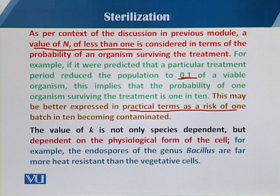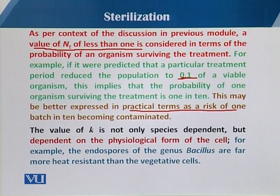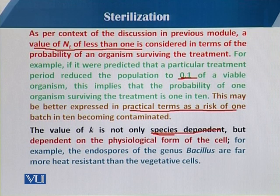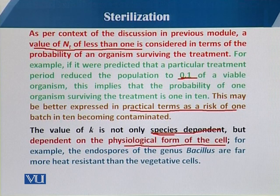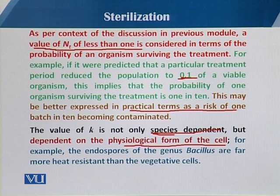So the number of batches determines the possibility of contamination being carried out. In this case, the value of K is not species-dependent but depends upon the physiological form of the cells. There are two different forms of cells: number one is the vegetative form, and the other form is the spore, resting, or resistant form.